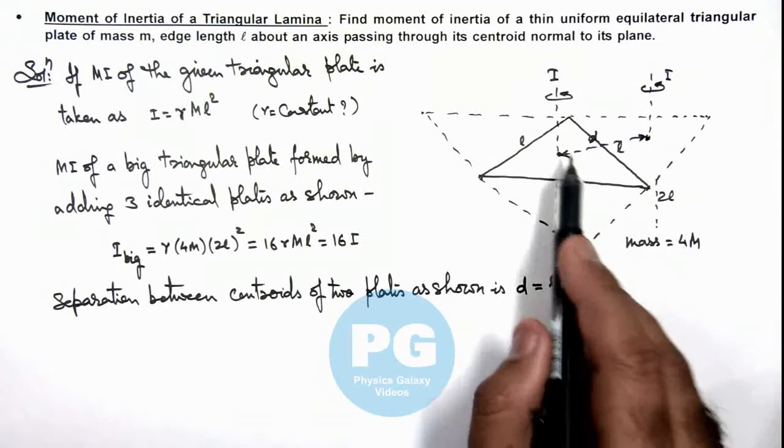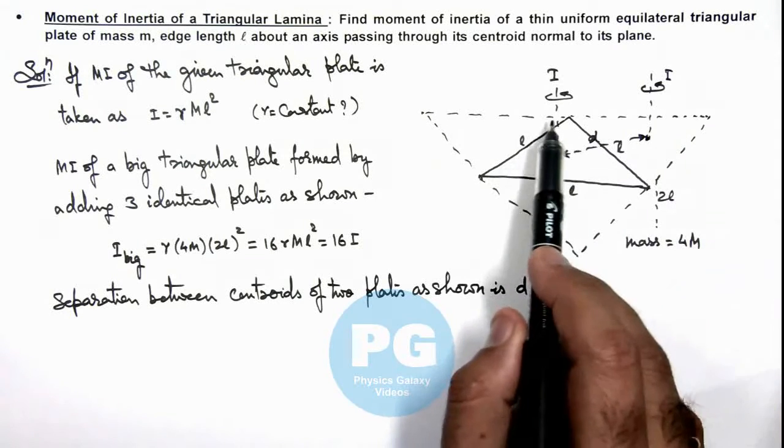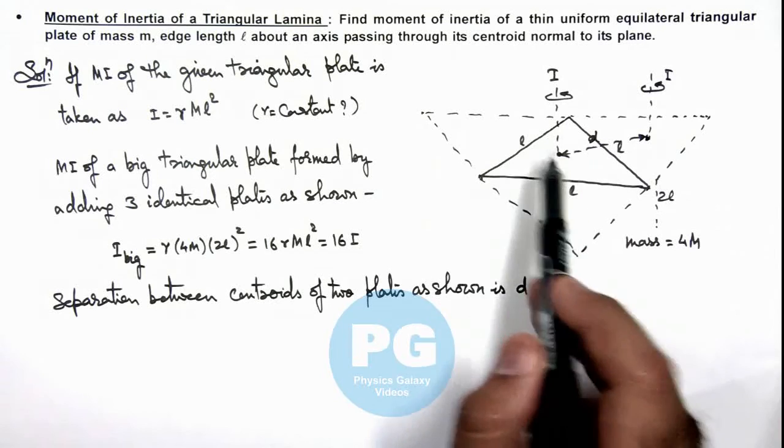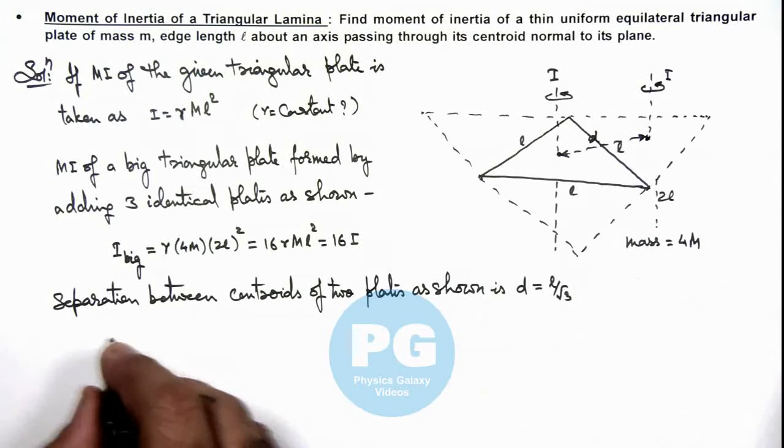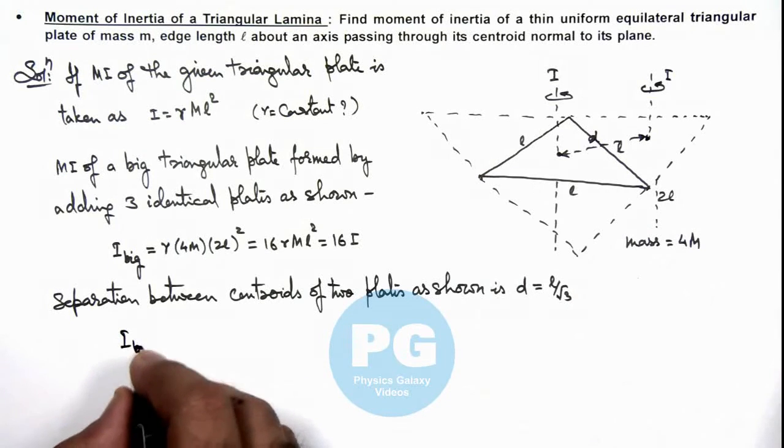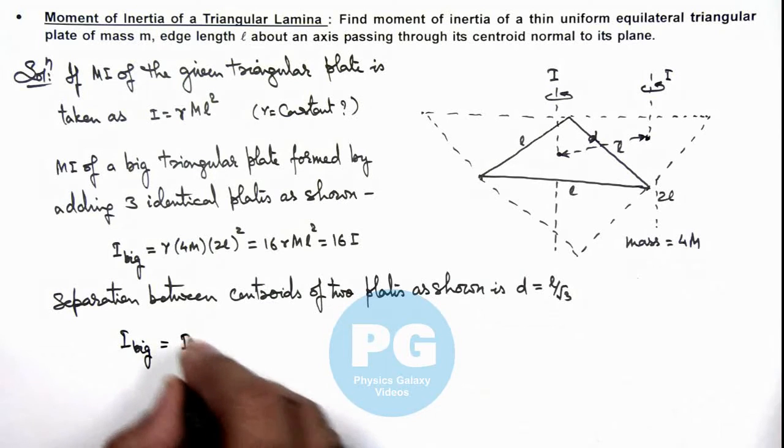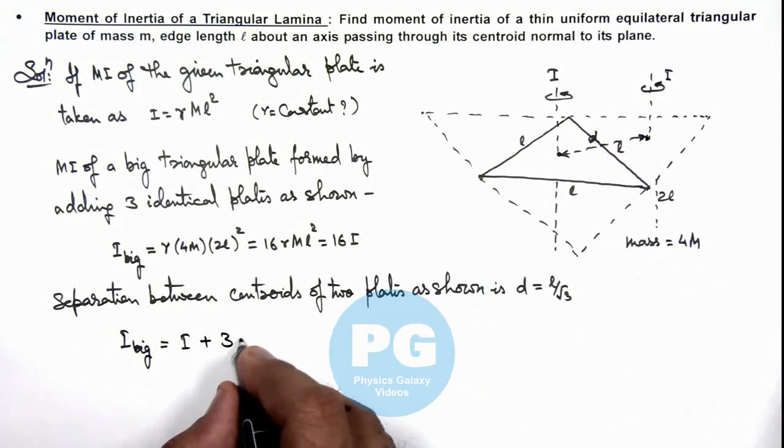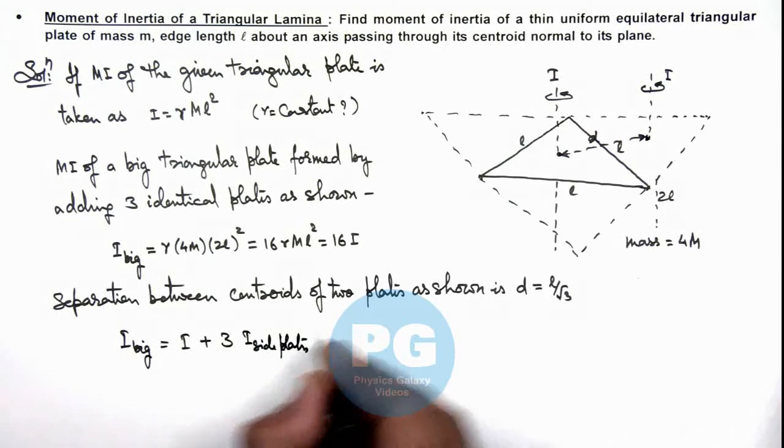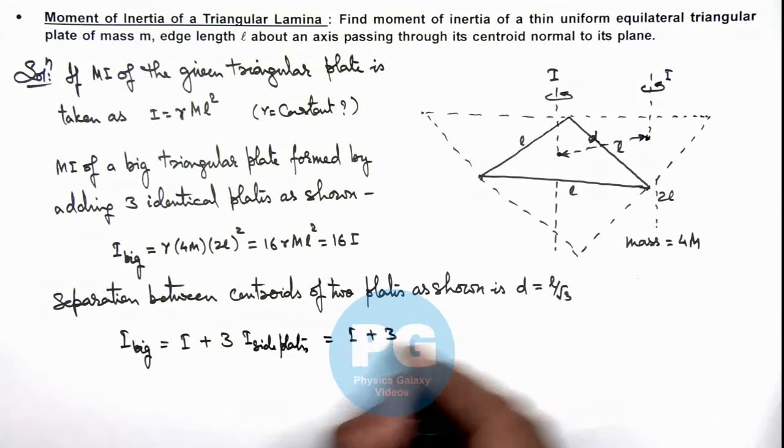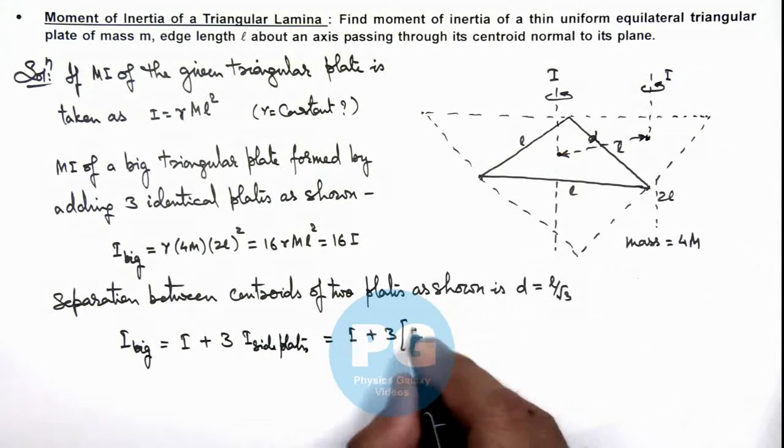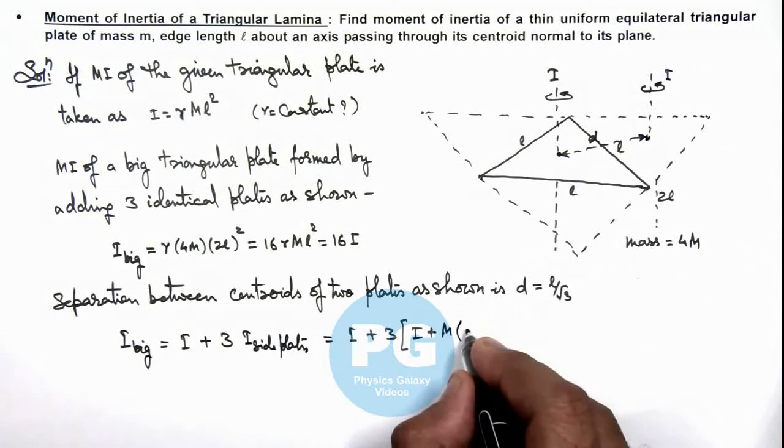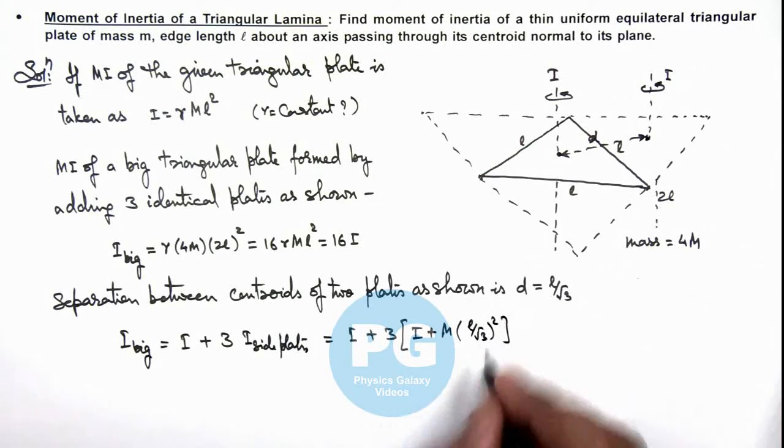So we can write that moment of inertia of big plate is equal to moment of inertia of central plate plus thrice the moment of inertia of this plate about this axis of rotation. So we can write I_big = I + 3 times (I + md²) where d = l/√3. This becomes I_big = I + 3I + 3m(l/√3)² which simplifies to 4I + ml².